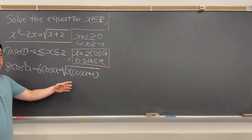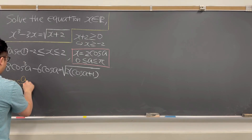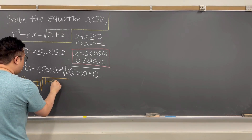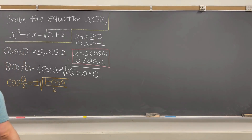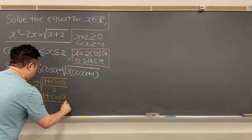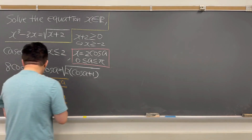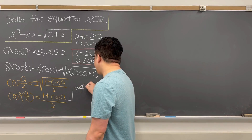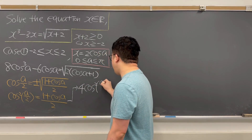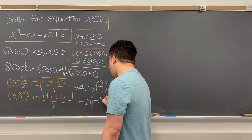From now, I'll be using the half-angle identity. We already know that cosine of A over 2 equals plus or minus the square root of (1 plus cosine A) over 2. So if you square both sides, then cosine squared of A over 2 equals (1 plus cosine A) over 2. Multiplying both sides by 4, we get 4 cosine squared of A over 2 equals 2 times (1 plus cosine A).